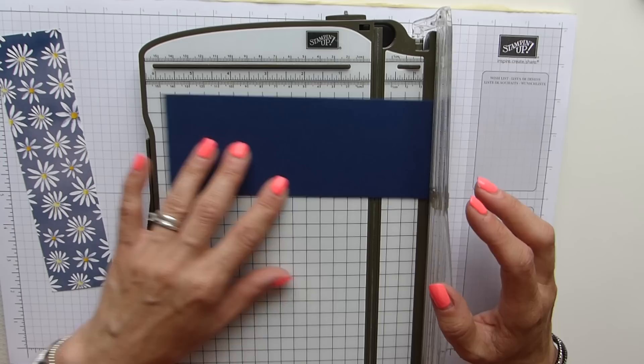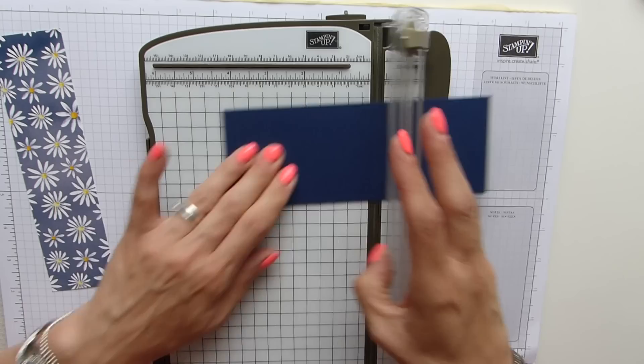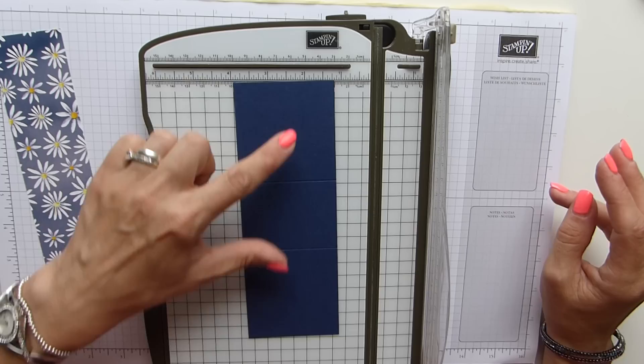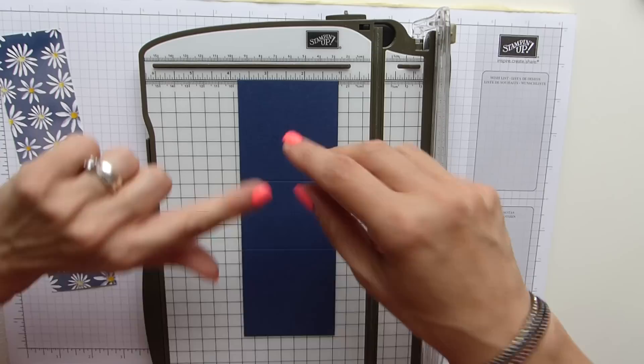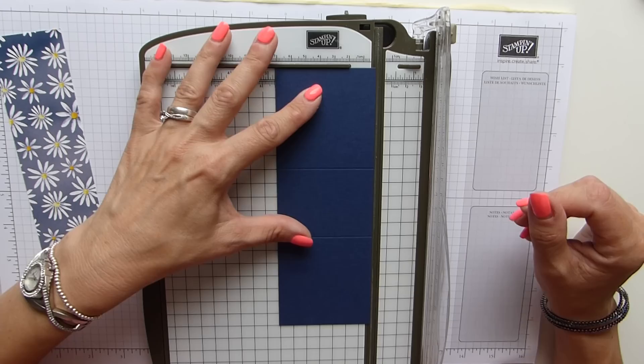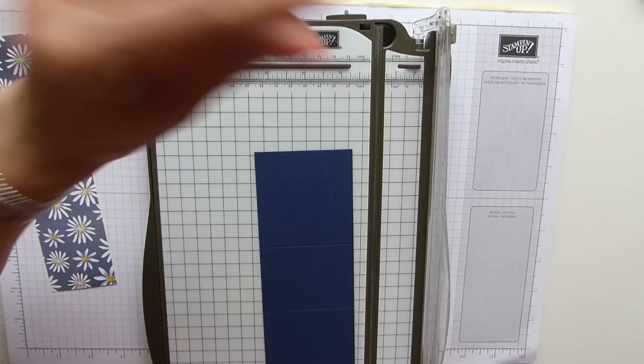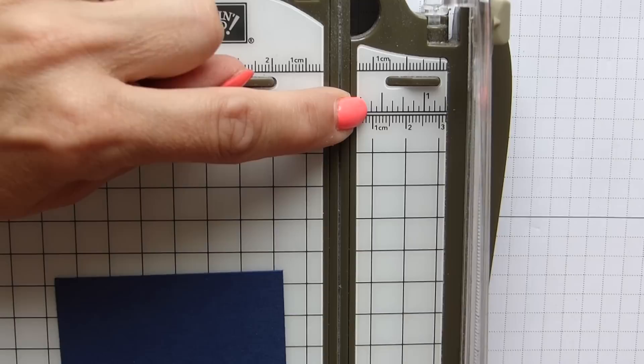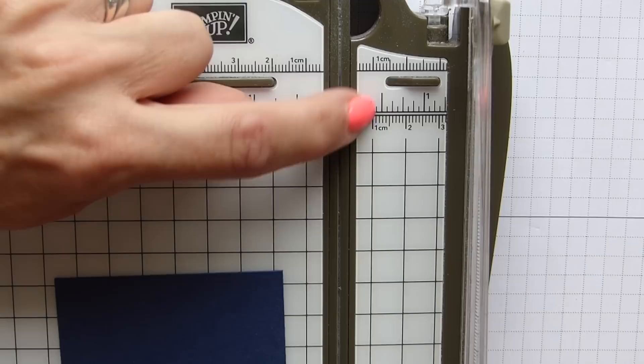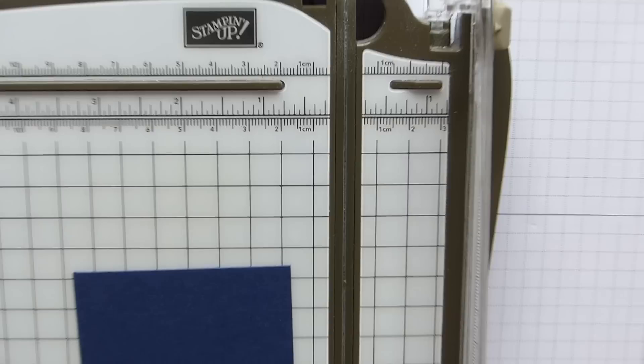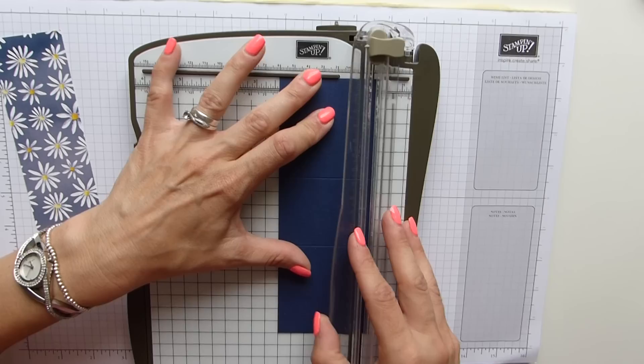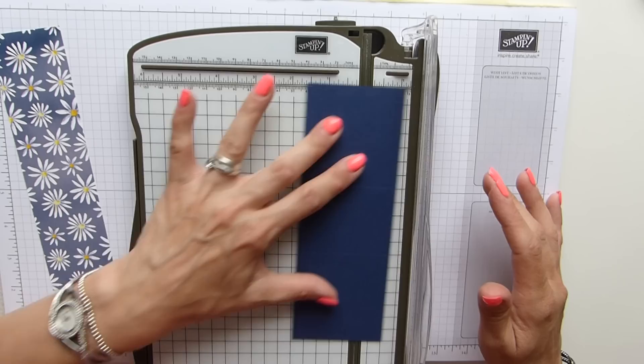So with the cardstock, you need to score at two and three quarters at either end. And then you need to score at three eighths of an inch from either end. Now, I know that a lot of people don't like to do that. It is just this mark here. So let me just zoom in on my trimmer and I'll try and show you. It's that one. So you've got a longer one and then a shorter one before you get to the half inch. So it's just that middle one there that you need to go to, which is also not far off one centimeter. So if that helps, you can work on the centimeter basis. So you score that again on both sides.